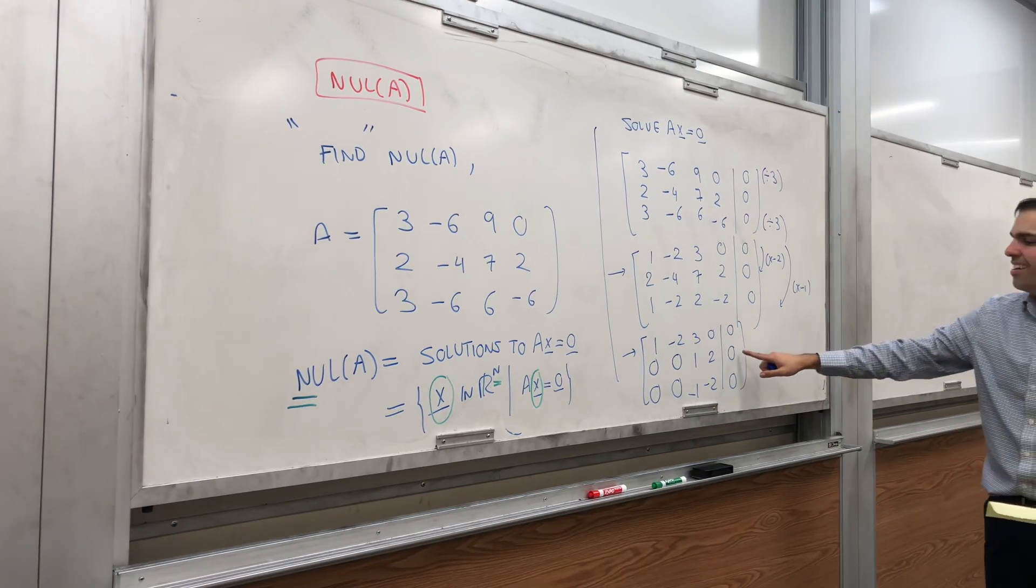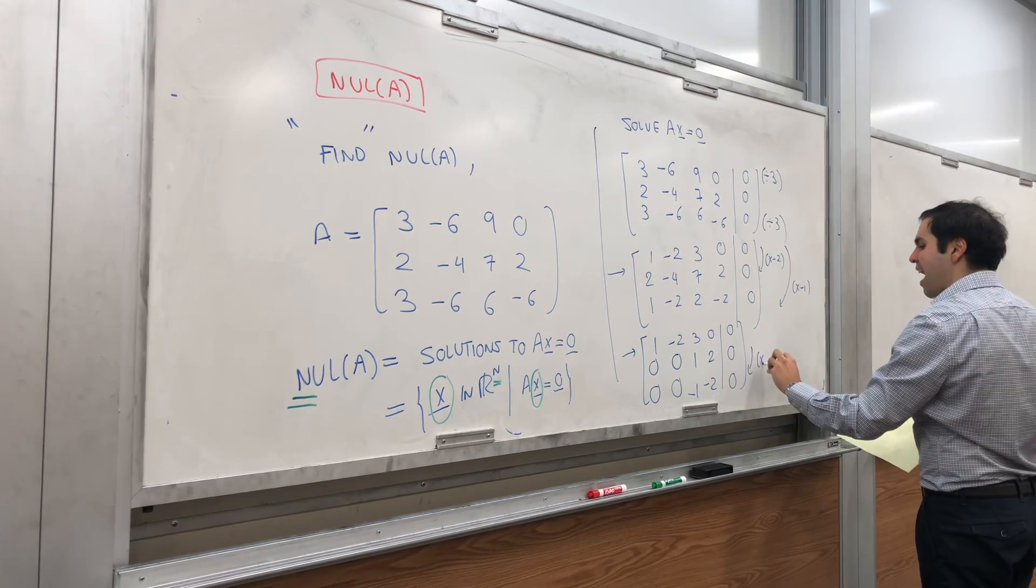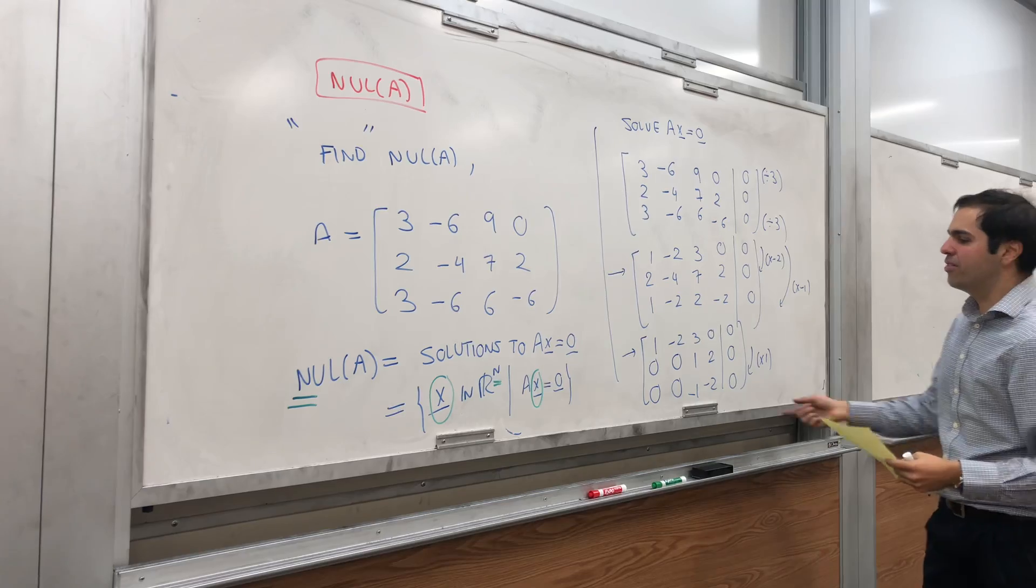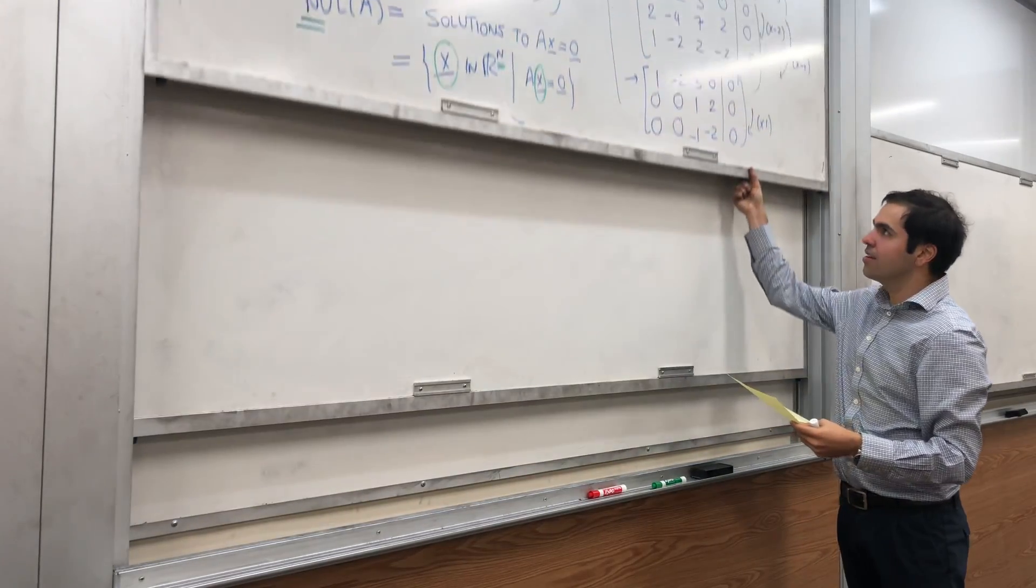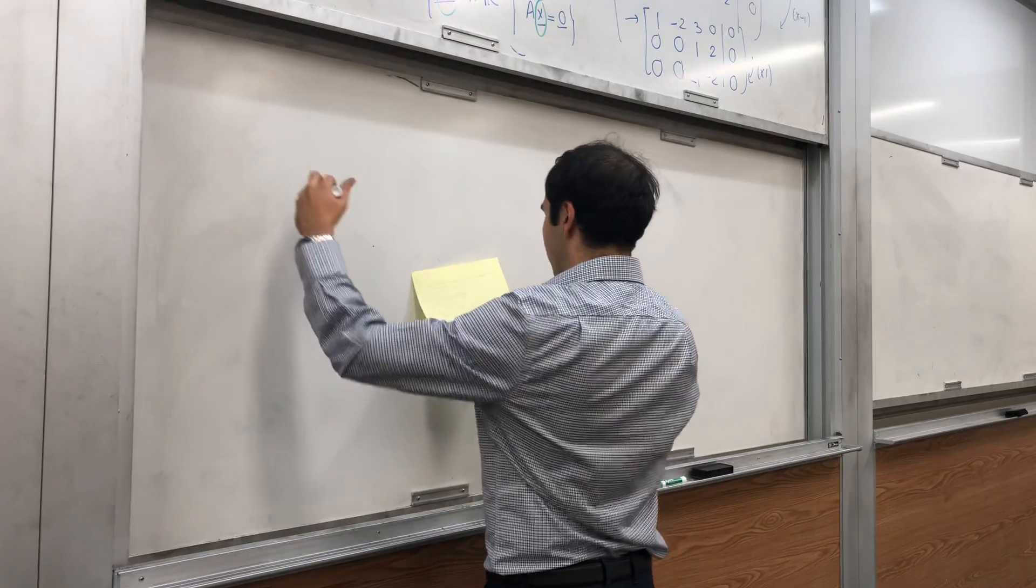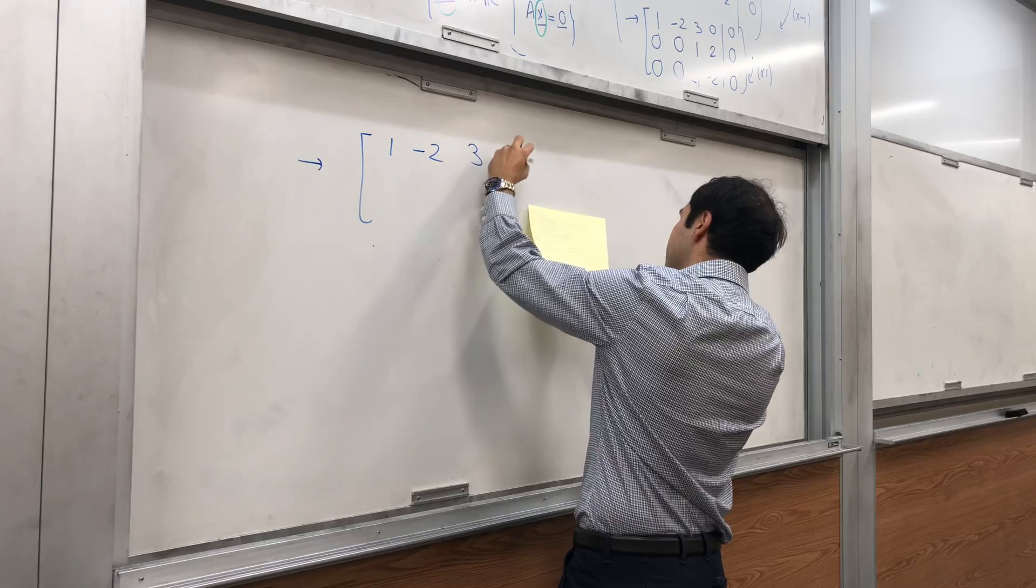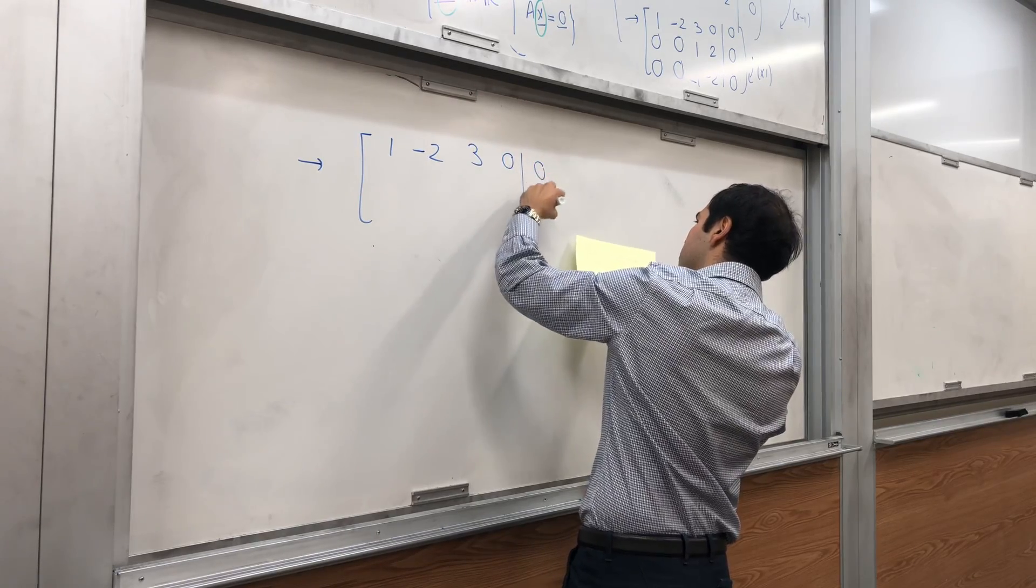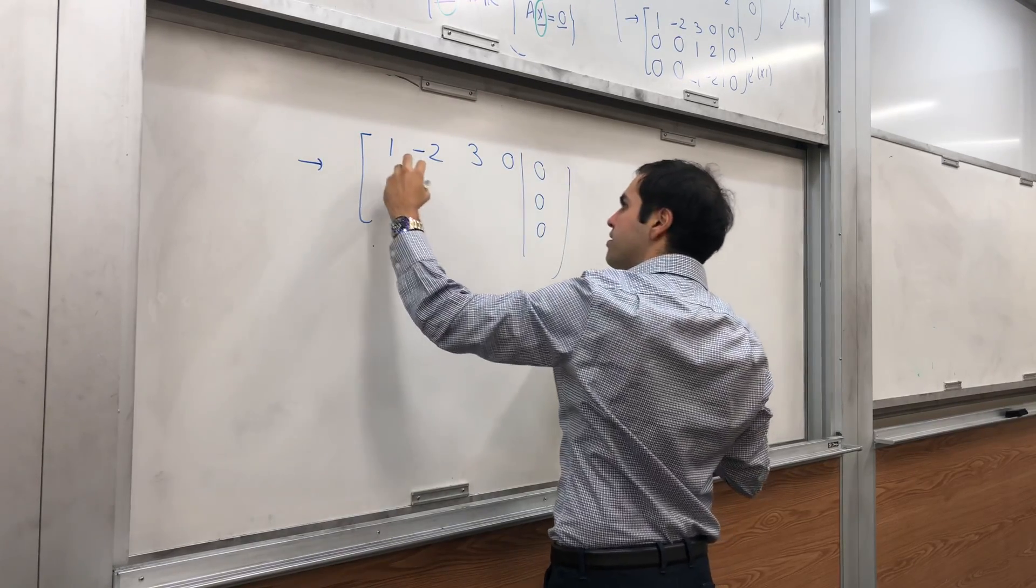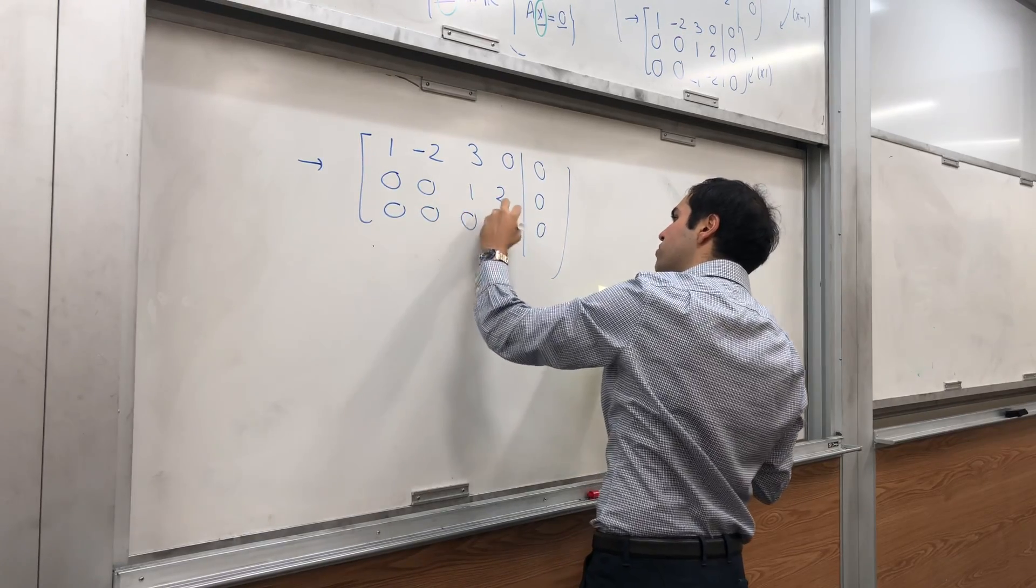How nice. Those two things are almost the same. So, let's add the second row to the third row. And we get, let's see, one, minus two, three, zero. Again, zero, zero, zero. Zero, zero, one, two. Zero, zero, zero, zero.